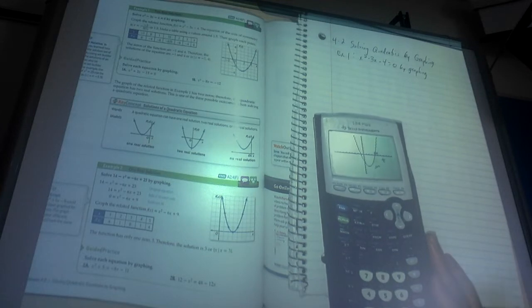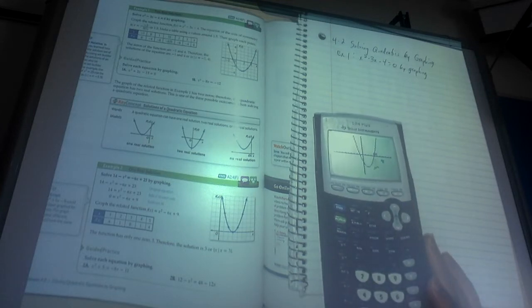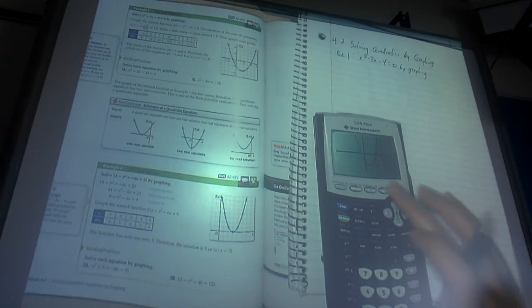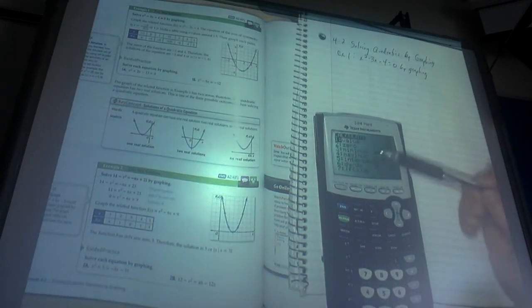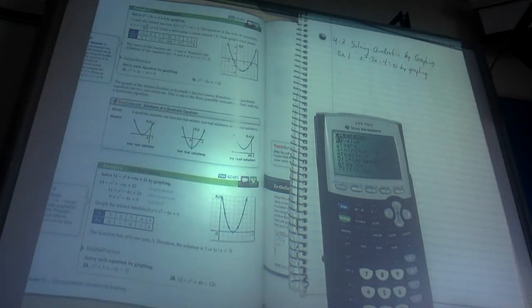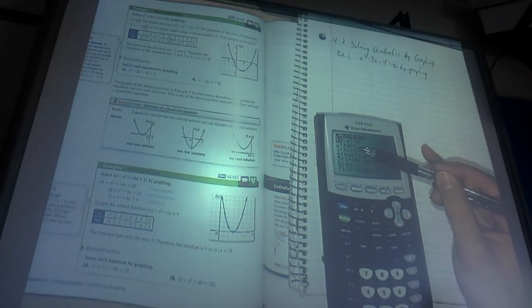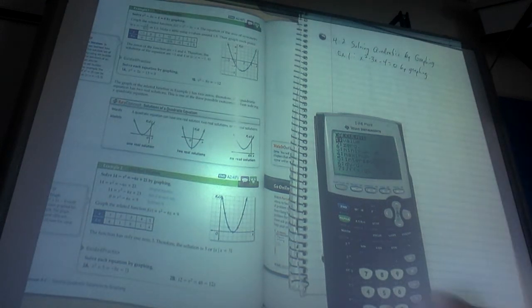But I do want to show you how the calculator will help you find this point right here, so we're going to go second, trace, and so we've used this intersect function before. When we were finding when two lines intersected, what we're going to do to find the roots or the x-intercepts is we're going to find the zeros.